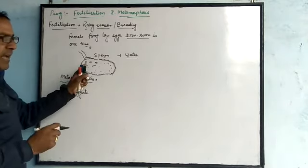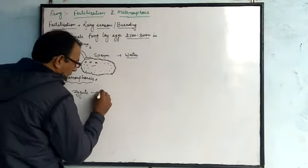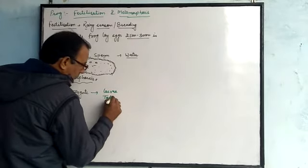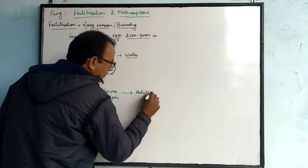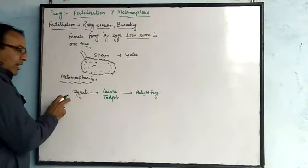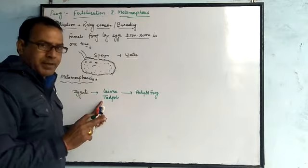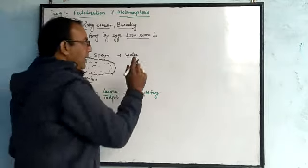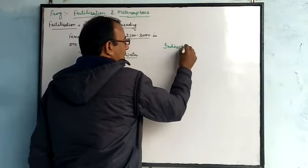After fertilization the egg forms the zygote. From zygote, larvae or tadpole is produced, and tadpole develops into an adult frog. When the zygote comes out as larvae, this larvae does not resemble the frog. This type of development is known as indirect development. So we can say that indirect development takes place in frog.